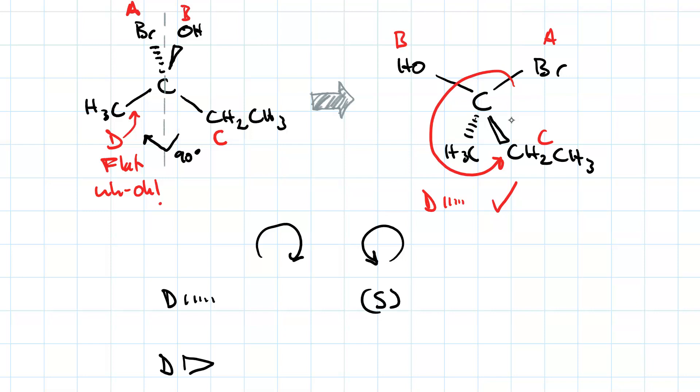On the other hand, if your lowest priority group is on a dash and your curved arrow is clockwise, then the chirality center is designated R. And if your lowest priority group is on a wedge, then the opposite rule applies. Clockwise is S, and counterclockwise is R.